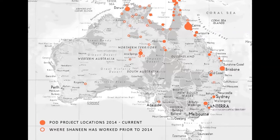This is a map of the various places I have undertaken projects across Northern Australia. The solid dots are where we're working at the moment, and the hollow dots are where I've worked prior to 2014. There are many places we've been lucky enough to visit and work with people on the ground.